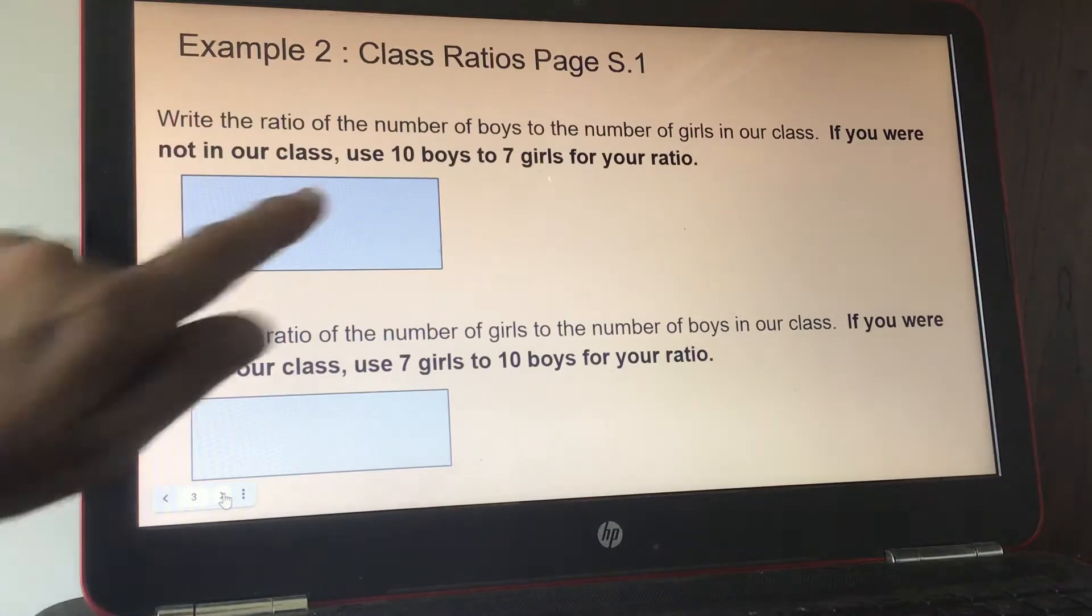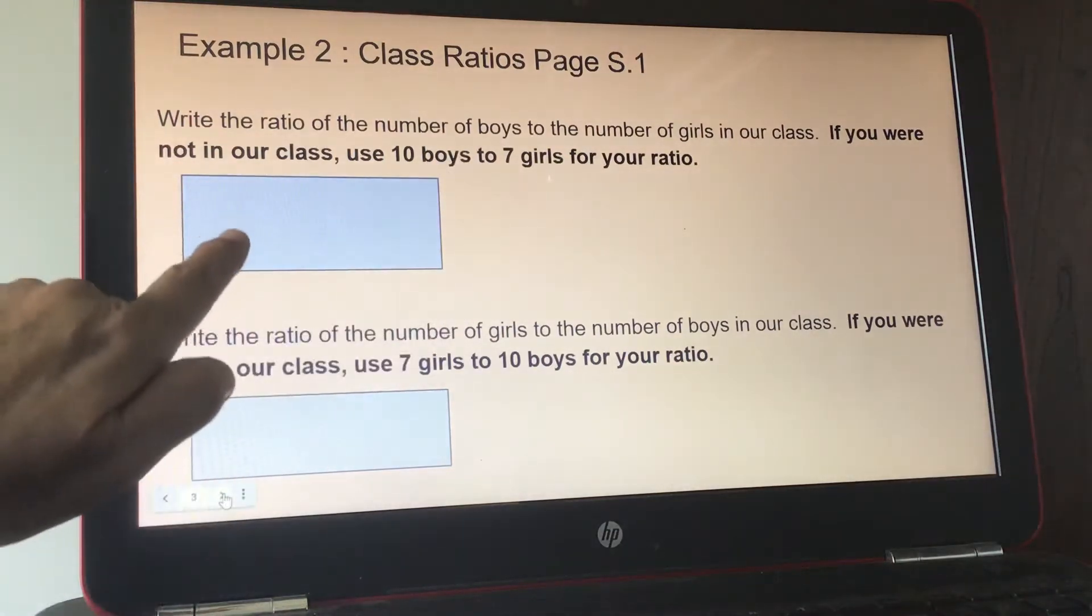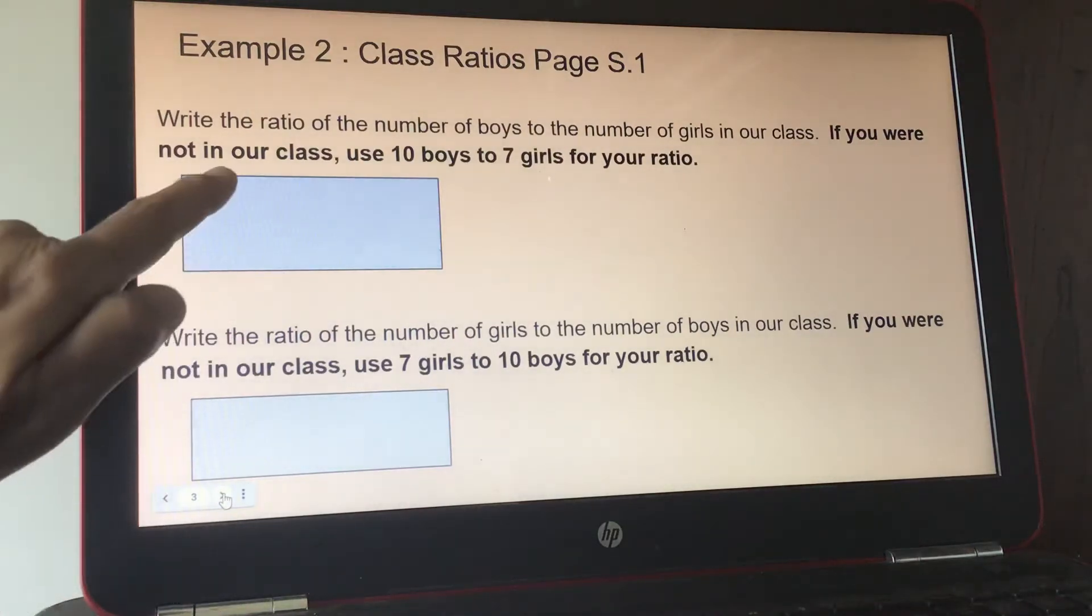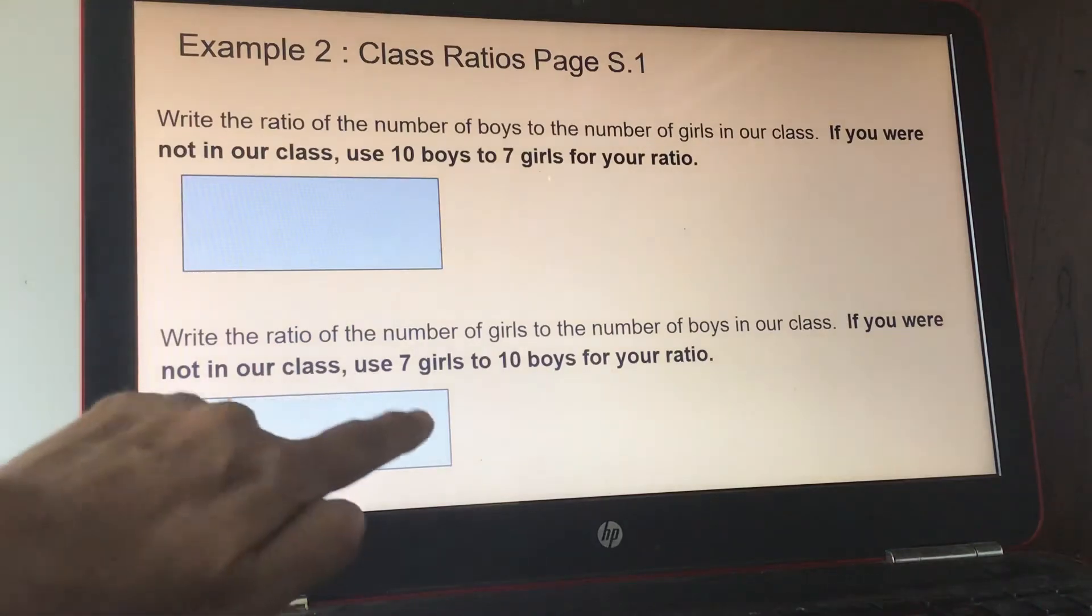Now when you're doing ratios, it's always the first one that they say for your first number. So if this one should be 10 to 7, this one should be 7 to 10.